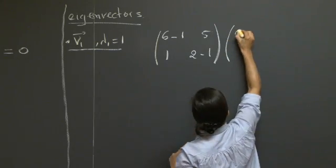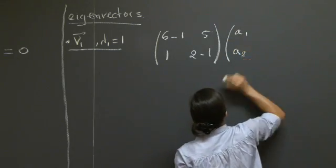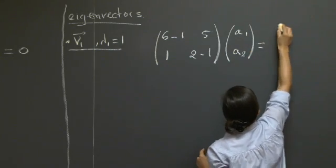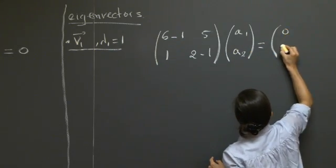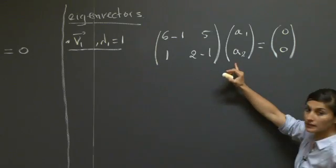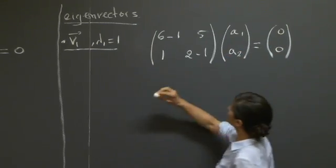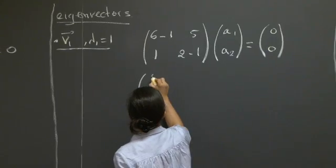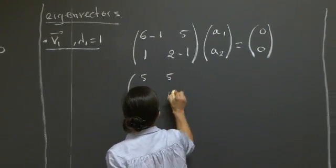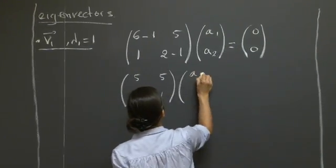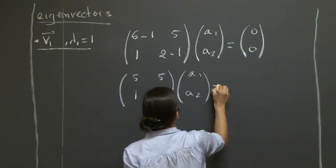Multiplying an unknown vector with components a1 and a2 equals the 0 vector. And basically here the unknowns are a1 and a2. So this is simply 5, 5, 1, and 1, times a1, a2 equals 0, 0.